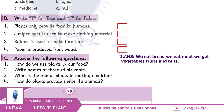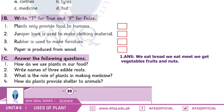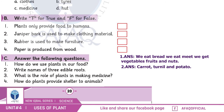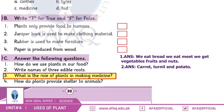Question number two: Write names of three edible roots. Three edible roots — carrot, turnip, and potato. Very good! Question number three: What is the role of plants in making medicines?